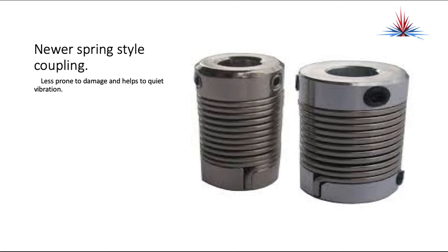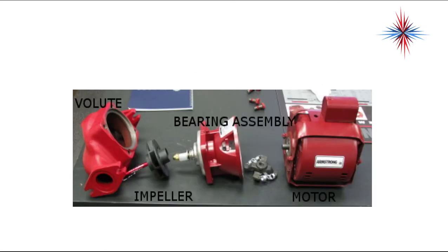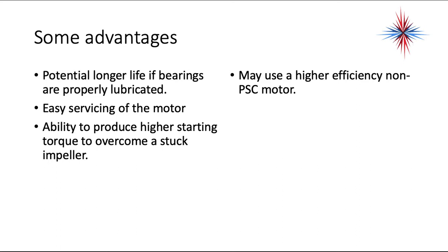Newer spring-style couplings are less prone to damage and help quiet vibrations. The impeller shaft penetrates the volute through a shaft seal that limits leakage. A three-piece circulator disassembles into the motor, bearing assembly, and the impeller and volute. You can service the motor, spring-type connector, and most of the bearing assembly without draining water or glycol from the system. Advantages include potentially longer life with properly lubricated bearings, easy motor service, and greater ability to produce higher starting torque to overcome a stuck impeller. It may also use a higher efficiency non-PSC motor.